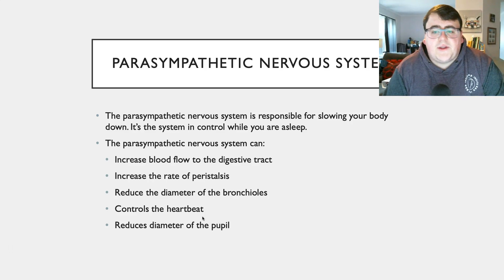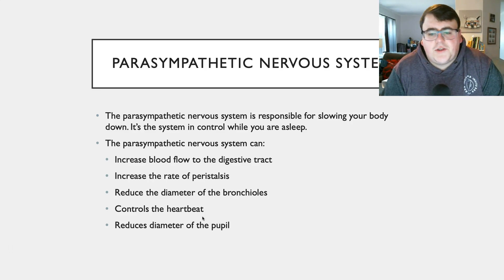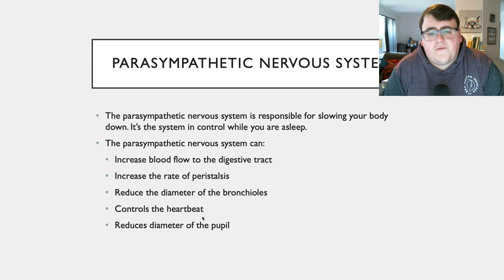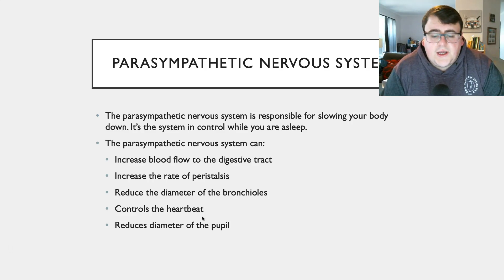The parasympathetic nervous system, on the other hand, slows down your body, and this is the type of nervous system that takes over while you're asleep, for example. To remember this: parasympathetic slows down your body — paralyzed is obviously being not able to move, so slow down, not able to move — para. The parasympathetic nervous system can increase blood flow to your digestive tract, increase the rate of peristalsis, reduce the diameter of the bronchioles, control your heartbeat, and reduce the diameter of your pupil, because none of those processes are really important when you're slowing down your body for rest.